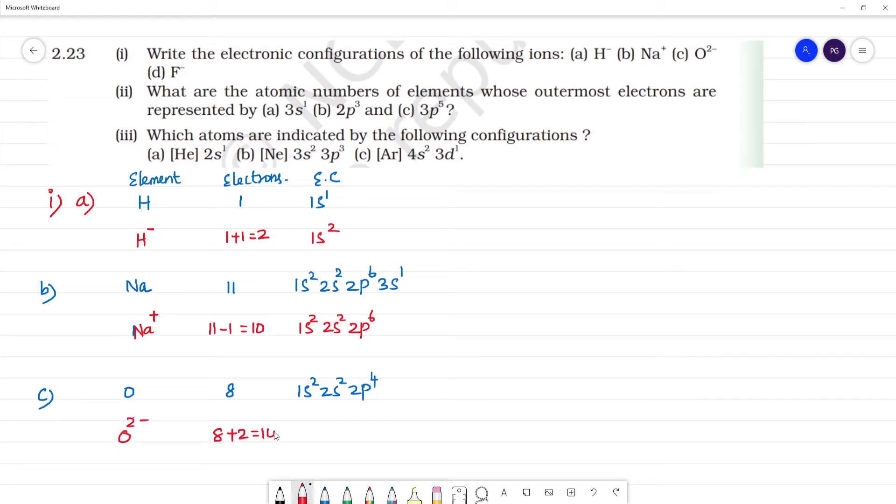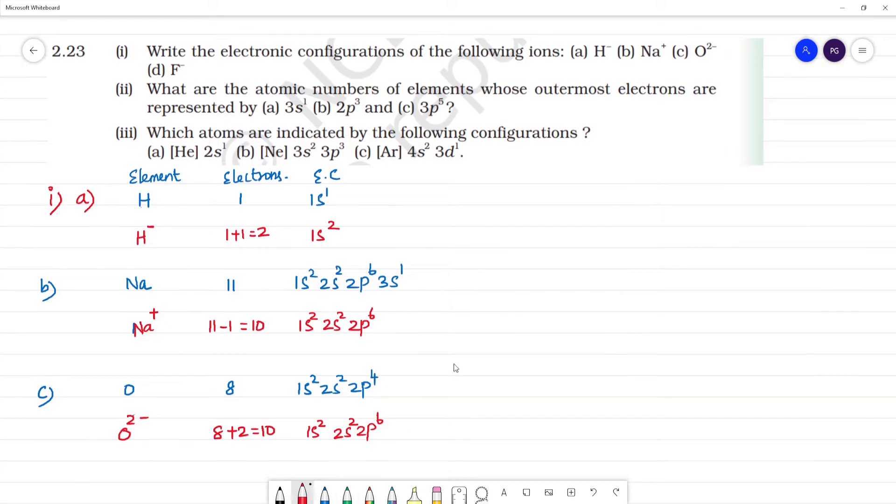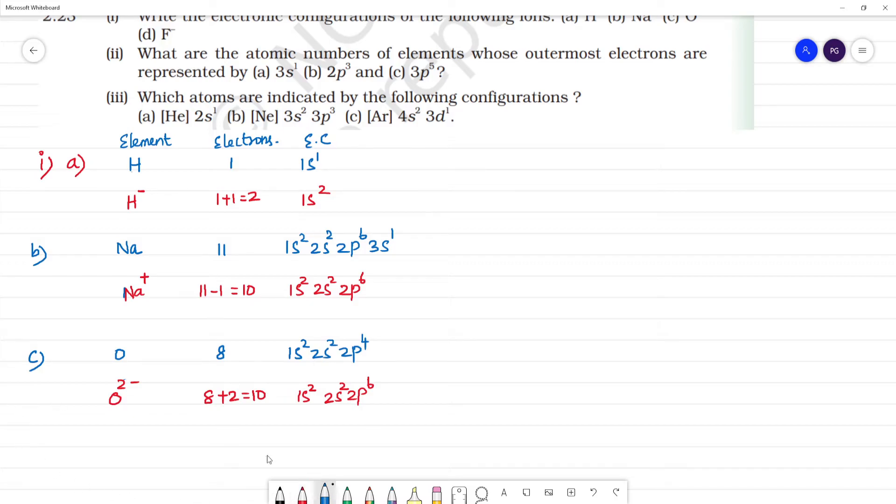We will have 10 electrons with electronic configuration 1s2 2s2 2p6. Next is F minus. Fluorine has atomic number 9, electronic configuration 1s2 2s2 2p5. Fluorine minus means one electron gained, 9 plus 1 equals 10 electrons with electronic configuration 1s2 2s2 2p6.